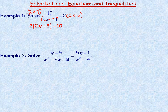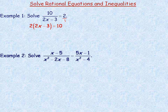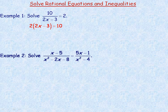It doesn't matter whether the 10 is written on the right or the left side. Some people will use a slightly different procedure — write the 2 as 2 over 1 and cross multiply: 2 times 2x minus 3 equals the product of 10 and 1. Either way, we end up with 2 times 2x minus 3 equals 10.